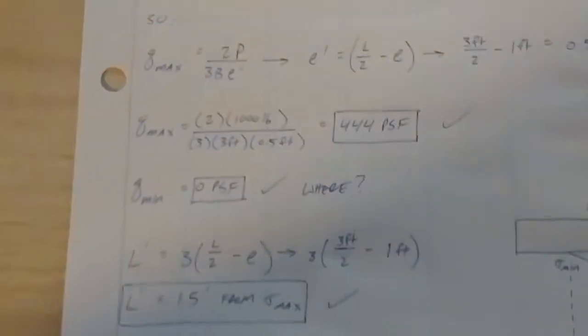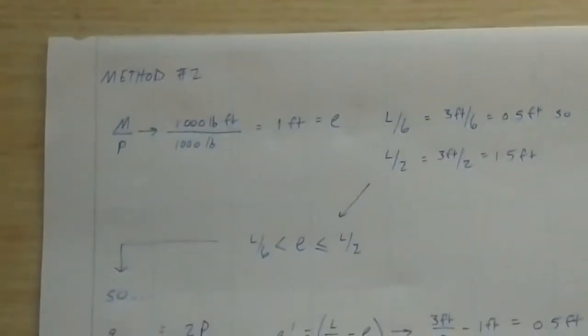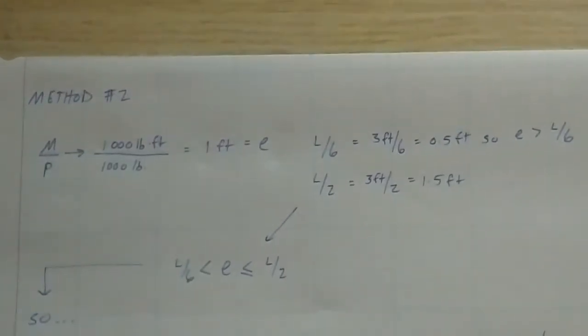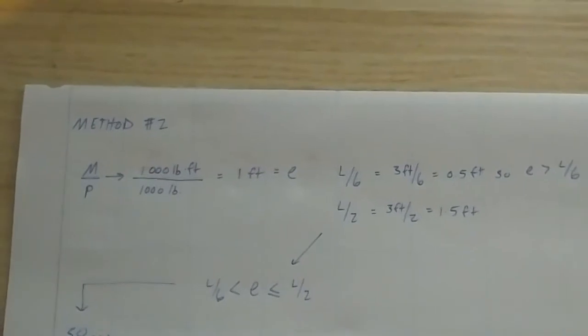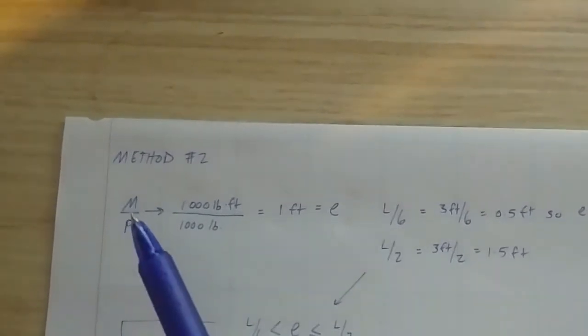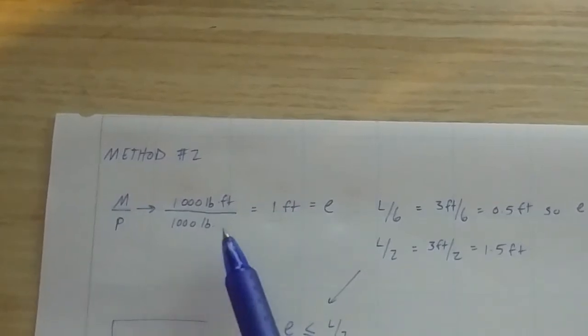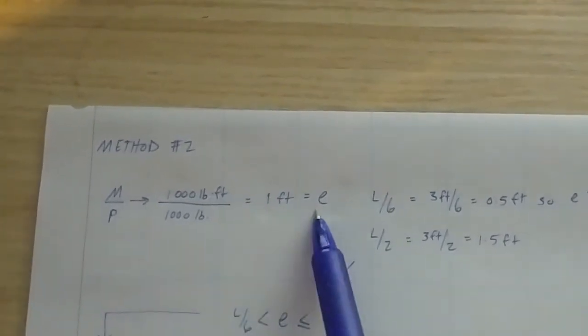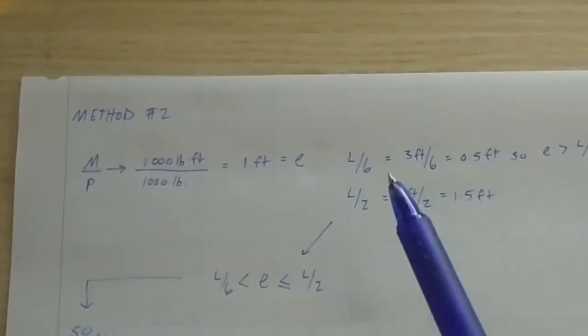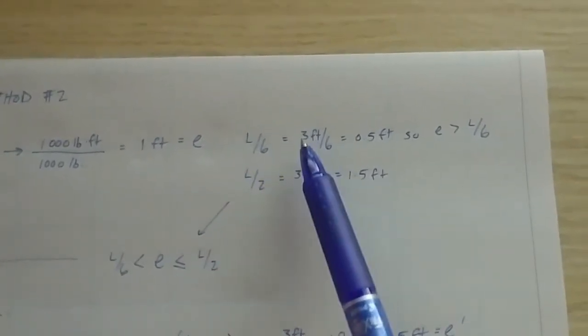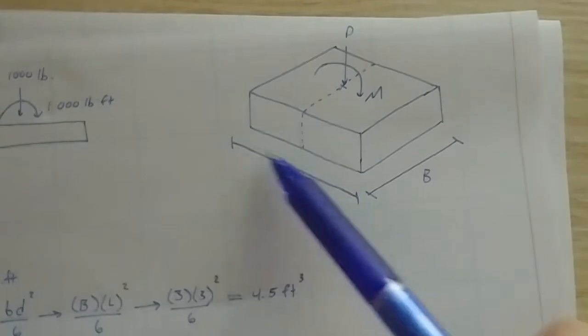So now we will head over to method two. Method two is based on checking your eccentricity against some variables, some preset, predefined variables based on testing. So what we have here, we know eccentricity is a distance. So when we find eccentricity by taking our M over our P, which is 1,000 over 1,000, again, pound-feet over pound, you cross out the pounds, just leaves you feet. That's a distance, so that's eccentricity, so we're good. That equals one foot.